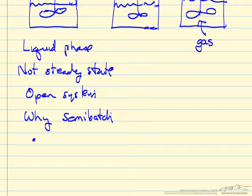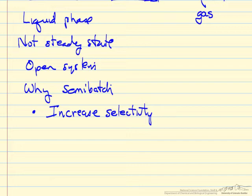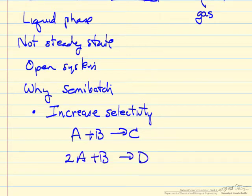One might be where we want to increase selectivity, namely we have multiple reactions taking place simultaneously, and we want to increase the selectivity by preferentially increasing the rate of one of the reactions relative to the other. So for example, let's suppose we have these two reactions.